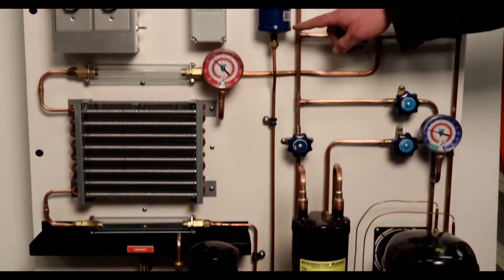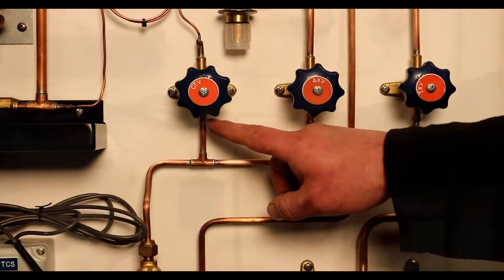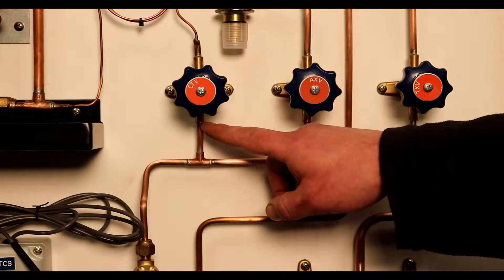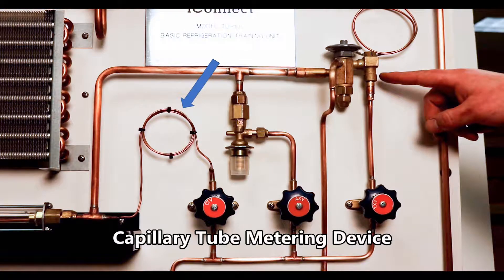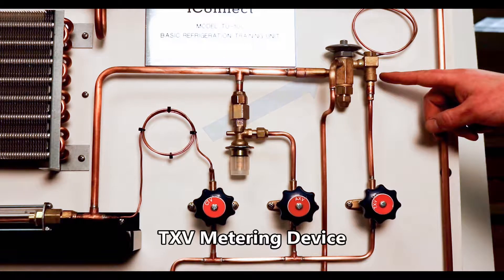The liquid line is equipped with a filter dryer and a moisture-indicating sight glass. The TU-100 can be operated with one of three metering devices: a capillary tube, an AXV (automatic expansion valve), and a TXV (thermostatic expansion valve).